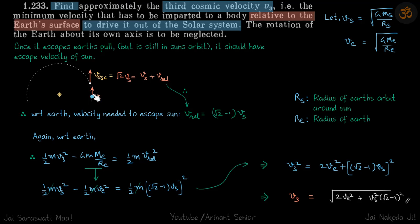So again, when this object is escaped earth, then it should have V escape for the sun, which is root 2Vs. Now root 2Vs is absolute velocity. But if you look from earth's surface, let's say it's going with the velocity V relative and earth's own velocity is Vs. So this absolute velocity is Vs plus V relative, where V relative is with respect to earth.